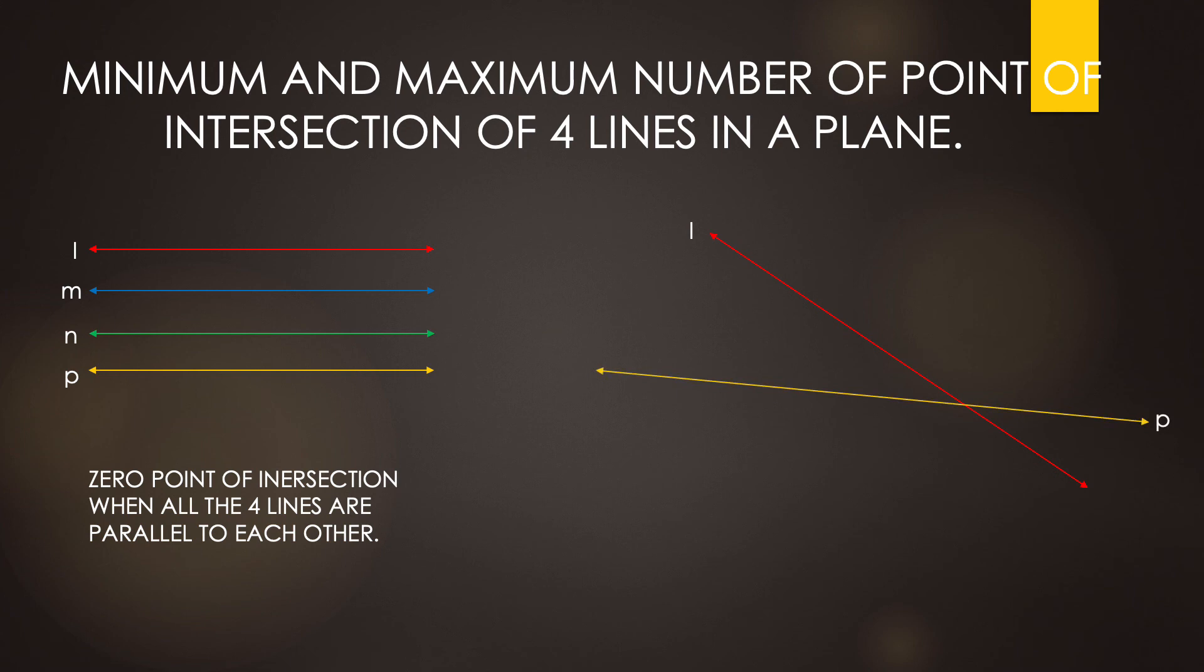Now, if I draw line M in such a way that line M intersects line L and P at one distinct point each, you can see total number of points of intersection. So, total number of points of intersection till now are 3.